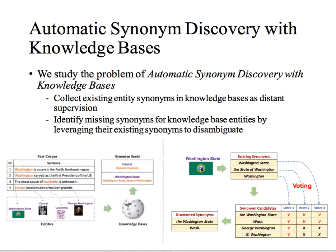To address these limitations, in this paper we study the problem of automatic synonym discovery with knowledge bases. Instead of relying on seeds constructed by domain experts, we collect existing entity synonyms in knowledge bases as distinct seeds. Also, instead of finding synonyms for entity named strings, we try to identify missing synonyms for knowledge base entities.